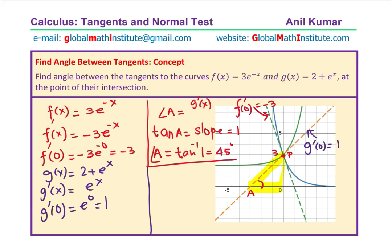For the second function f(x), the slope is −3, so tan(B) = −3. This is an obtuse angle since tan(B) is negative — it is in quadrant 2. Angle B = tan⁻¹(−3). Using the calculator set to degrees and rounding to one decimal place, we get 108.4°. So angle B is 108.4 degrees.